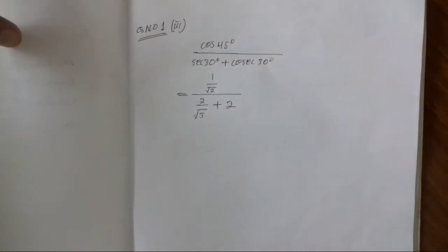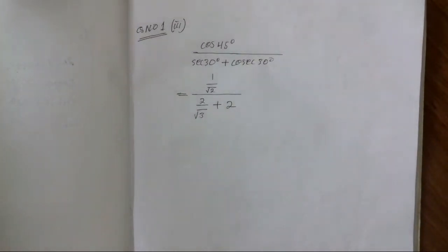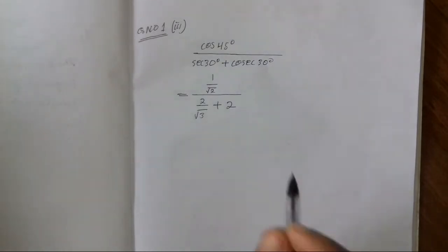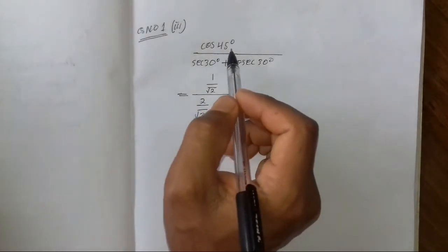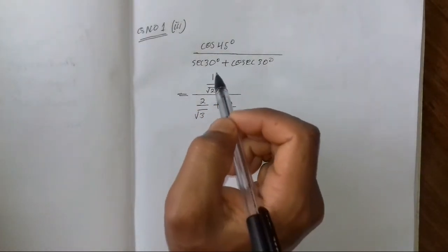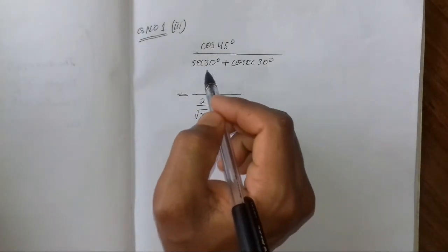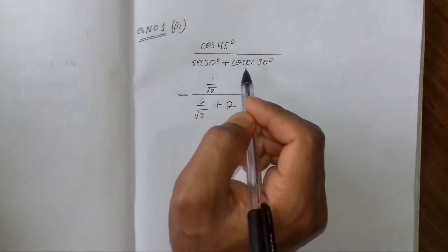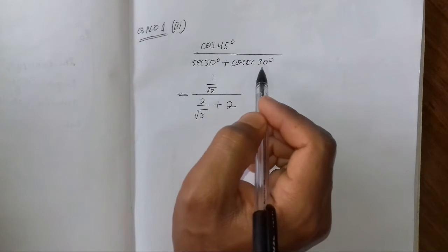Hello students, this is lesson 8.2, question number 123. The question is: cos 45 degrees divided by sec 30 degrees, plus cos 30 degrees.